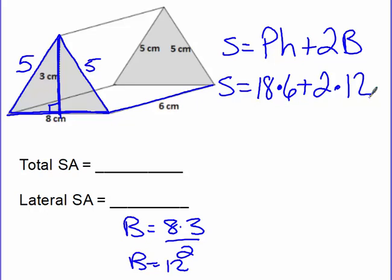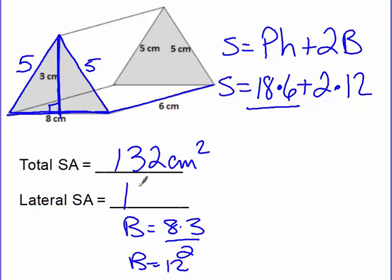Now we just go to our calculator and type that in. So 18 times 6 plus 2 times 12 gives us a total surface area of 132 centimeters squared. And again, because we're finding area, our label is squared. Now to find the lateral surface area, we just look at the first part — we exclude the bases. So we would just do 18 times 6 and we would end up with 108 centimeters squared for the lateral surface area.